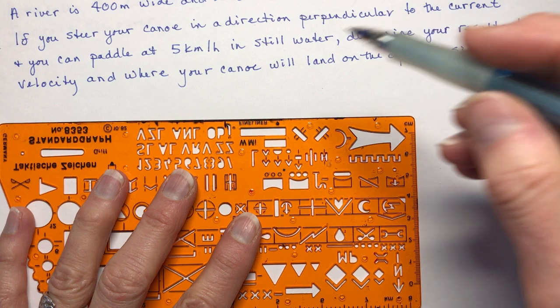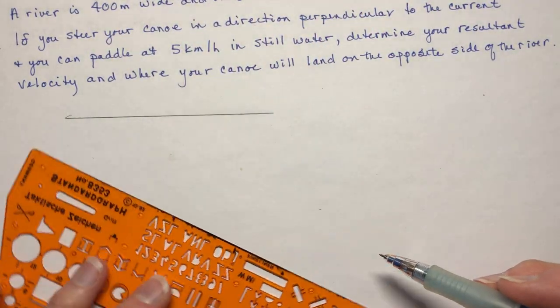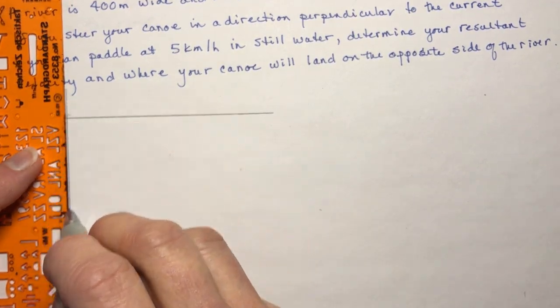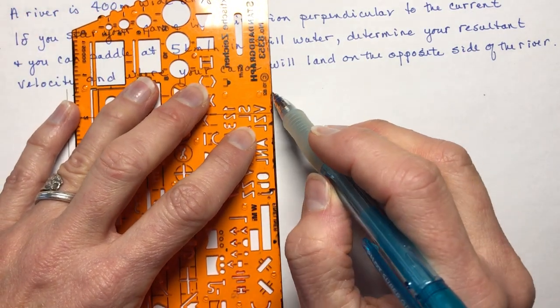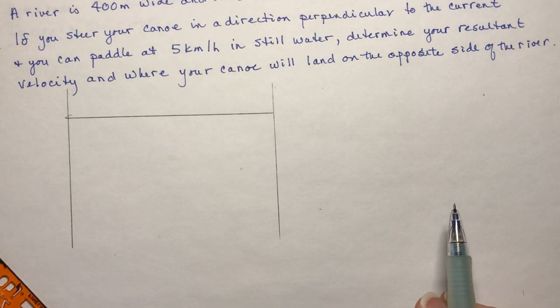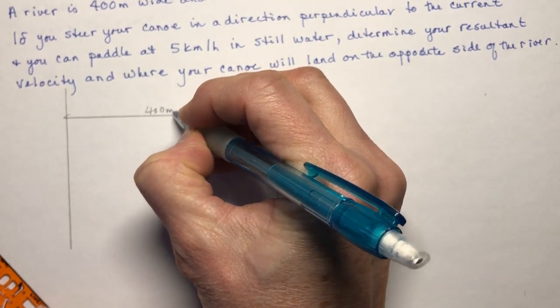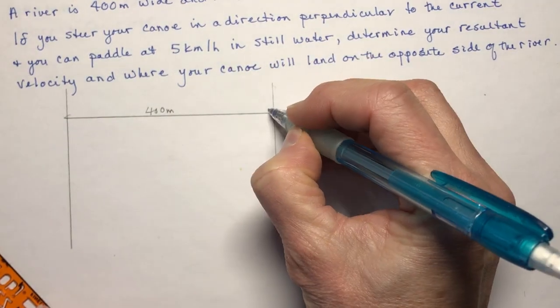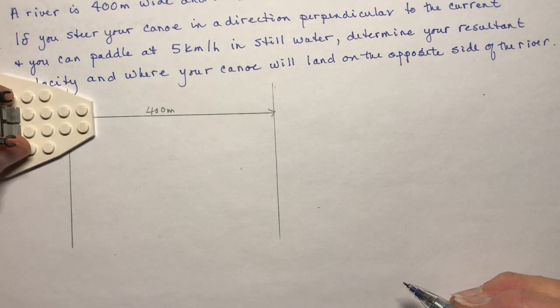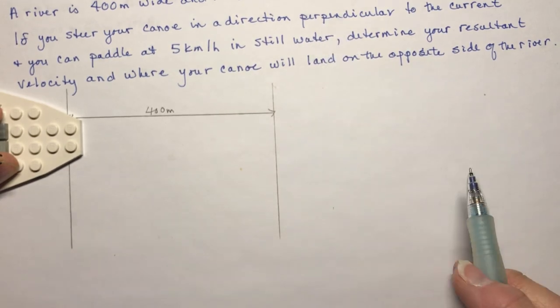So we'll draw this one that is the question that was posed by one of my viewers. And certainly if you have something that's bothering you, let me know. Now, my writing is very crooked today. You know what they say, if you write uphill, you're a very positive person. It's definitely me. Okay, so we have a 400 meter wide river. There's the river from here to here, and I'm going across the river like this. And it says, if you steer your canoe in a direction perpendicular to the current.